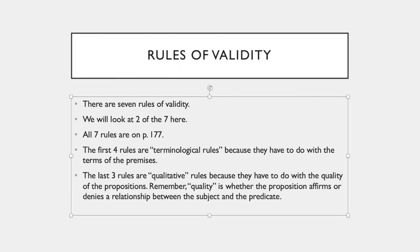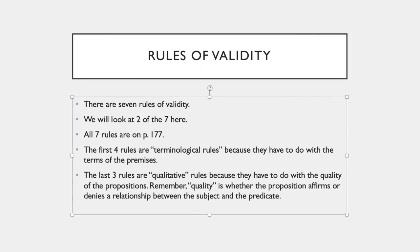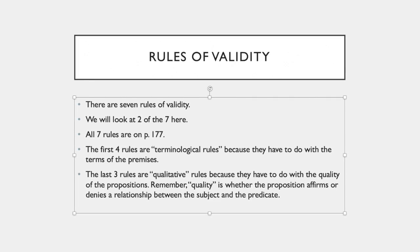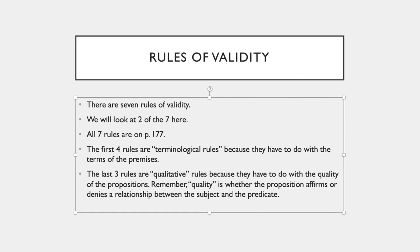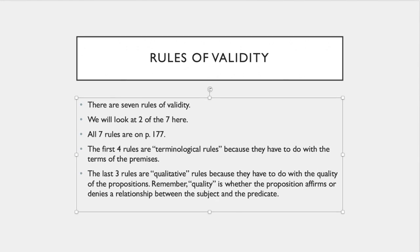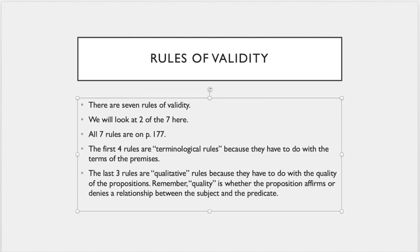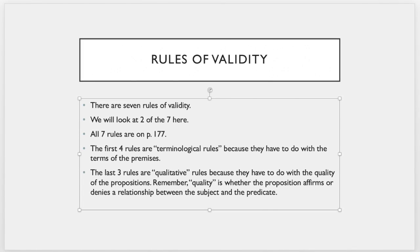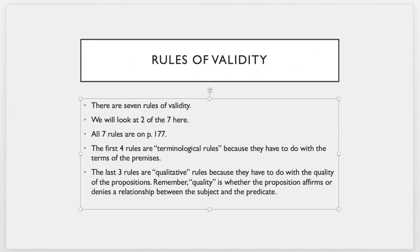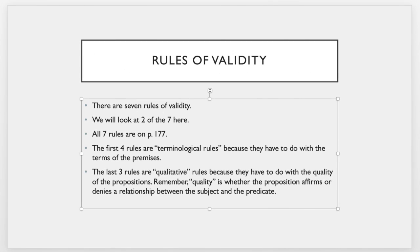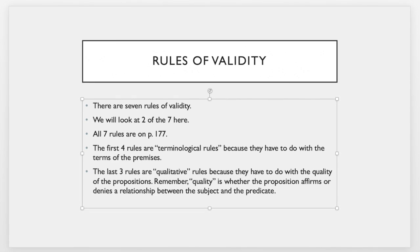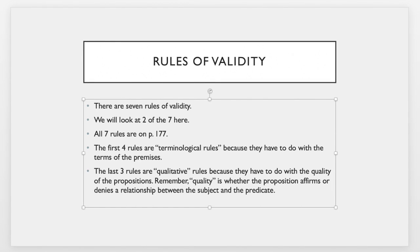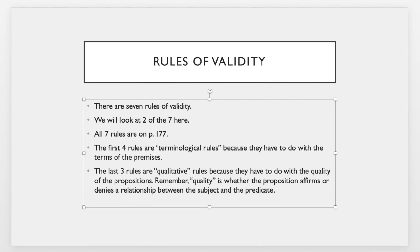The first four are terminological rules because they have to do with the terms of the premises and conclusion. The last three rules are qualitative rules. We won't look at them in these slides, but we will look at them in the future. They have to do with the quality of the proposition. Remember, quality is whether the proposition is an affirmative or a negative proposition, that is whether or not it affirms or denies a relationship between the subject and the predicate.